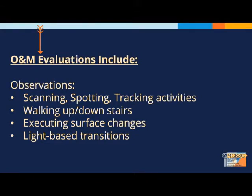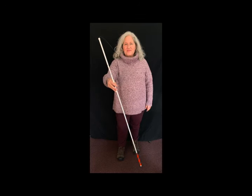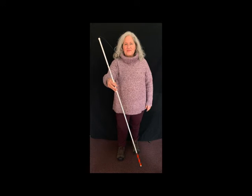The child is also observed walking up and down stairs if available, and executing surface changes both indoors and outdoors, as well as dealing with what we call light-based transitions. Depending on the child's vision or vision diagnoses, I may also want to assess the child in terms of need for a pre-cane device, a long cane, and/or an identification cane for the visually impaired.